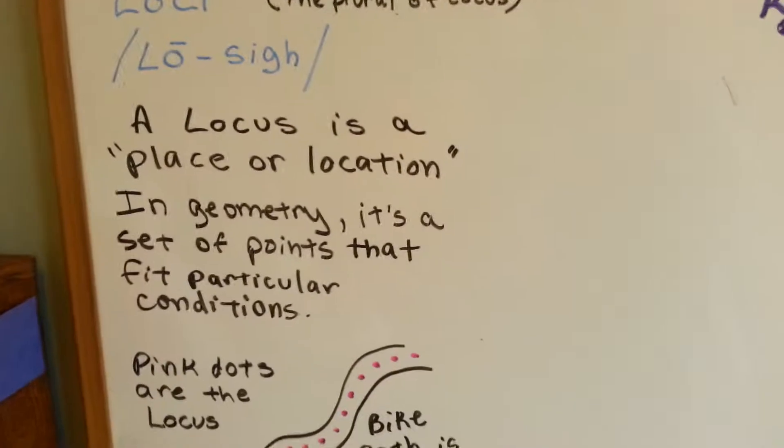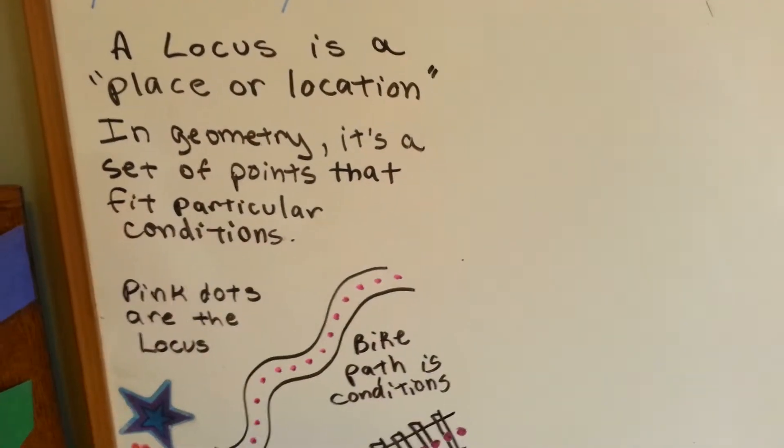So, a locus is a place or location, and in geometry, it's a set of points that fit particular conditions.